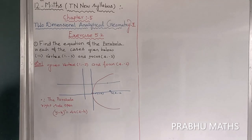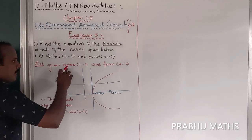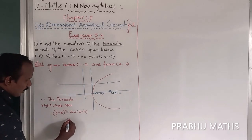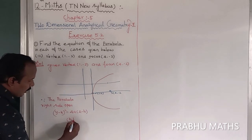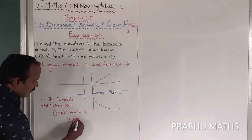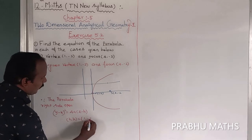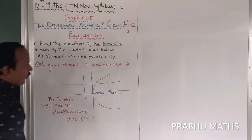First of all, find out the vertex. The vertex is directly given, so h comma k is equal to (1, -2).